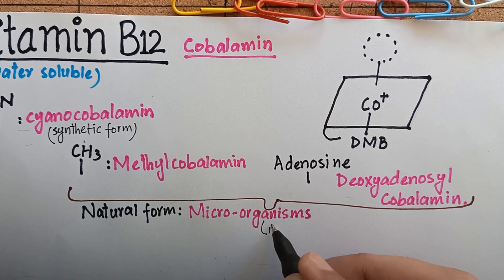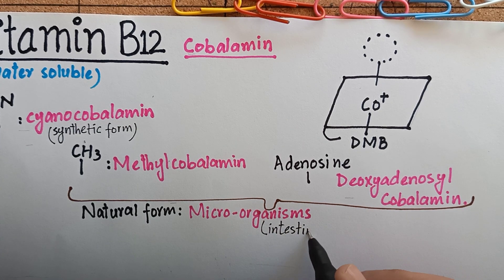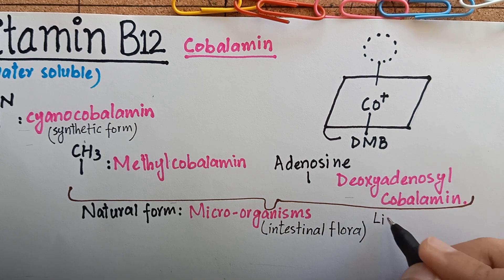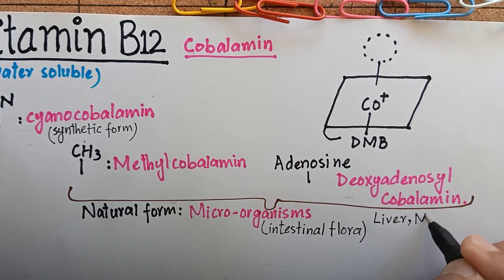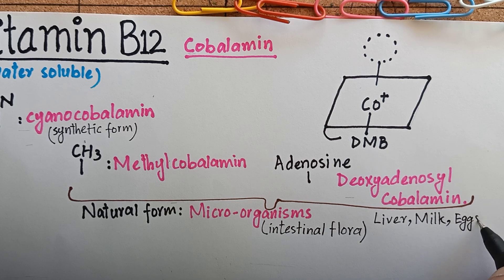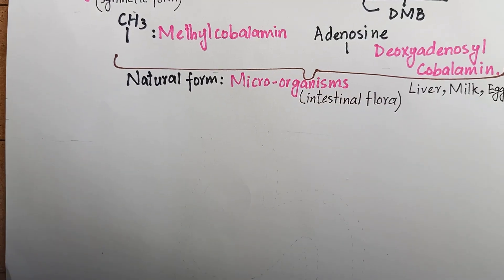We humans obtain vitamin B12 from our natural intestinal bacterial flora, or by eating foods derived from other animals — for example, liver, whole milk, eggs, fish, etc., which are rich sources of vitamin B12.